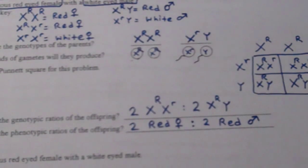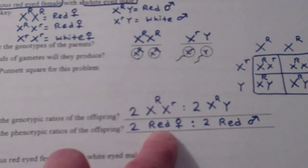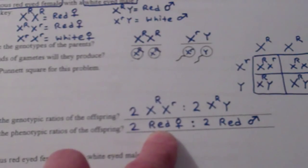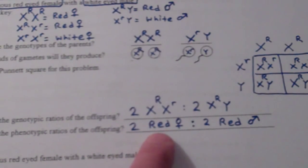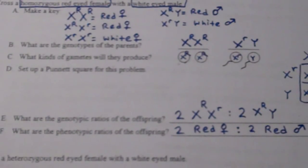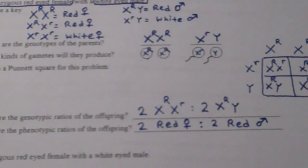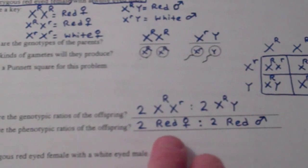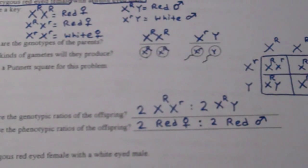You don't want to add any extra information here. You wouldn't want to say 'two red heterozygous females' because then you're giving information about their genotype — we just want to talk about the phenotype. If you like ratios or percentages, you can use percentages.